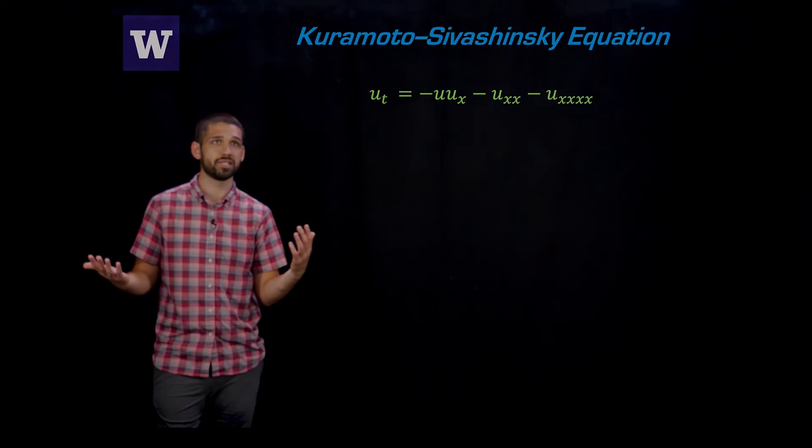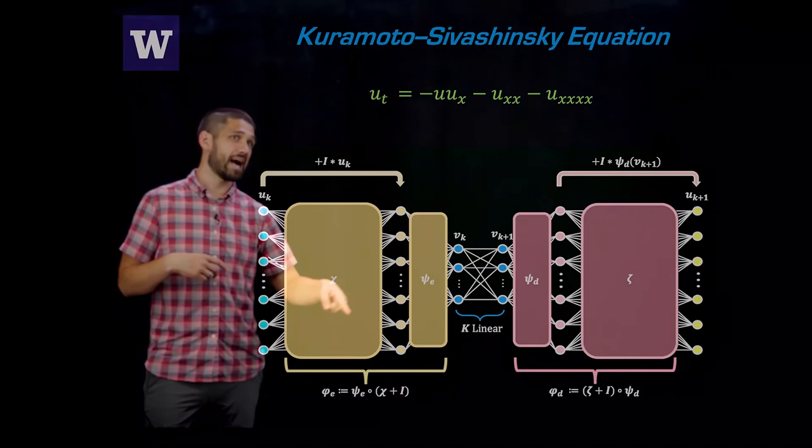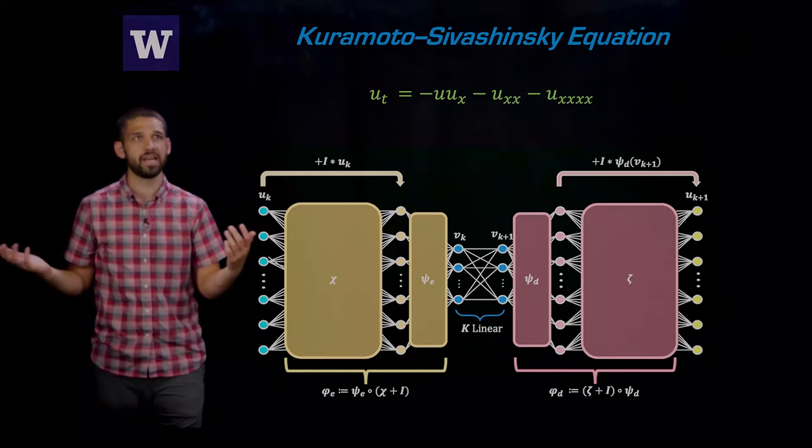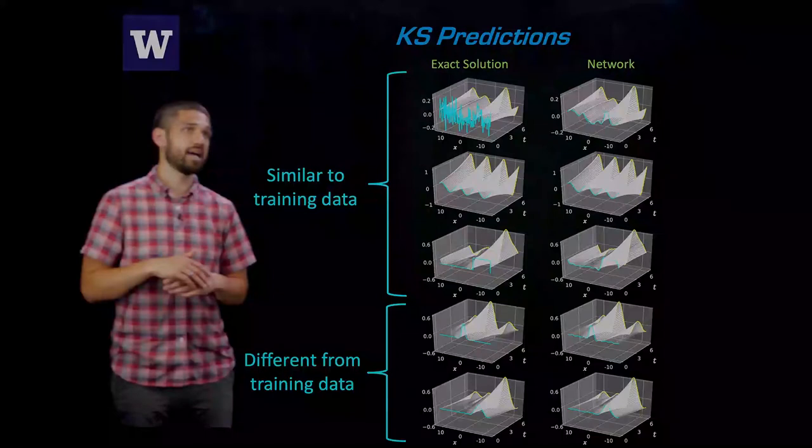So if we were only able to linearize Burgers equation with our method, that wouldn't be so great, because we already know how to do that with the Cole-Hopf transformation. So we wanted to extend it and actually test it out on a system where we don't know how to linearize. And we chose the KS equation. So as a reminder, this is like the network architecture. And as I mentioned before, this outer encoder and the outer decoder on the other side can actually have any architecture that you want. So for KS to just show a different option, we did a convolutional neural network architecture with convolutional and average pooling layers.